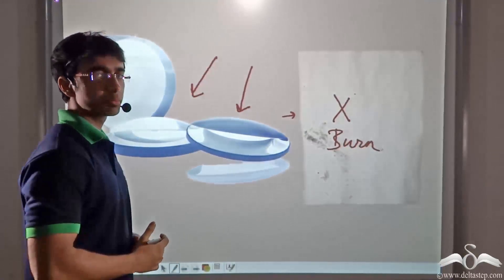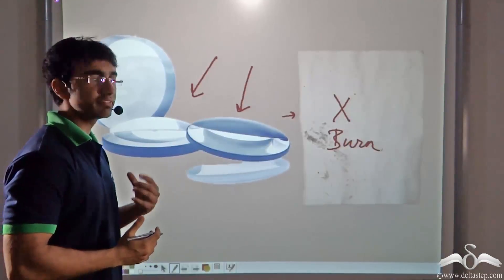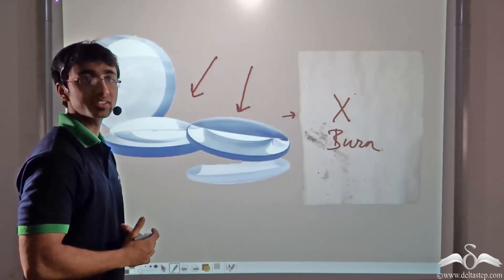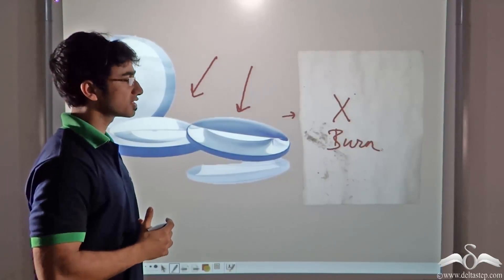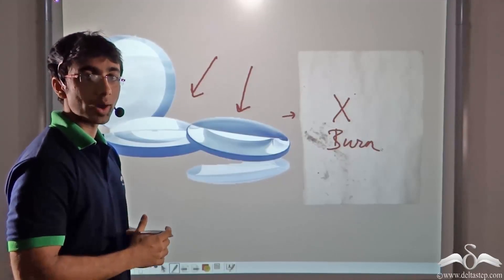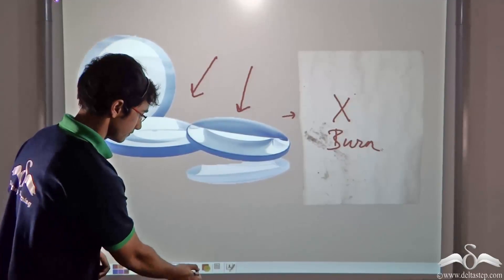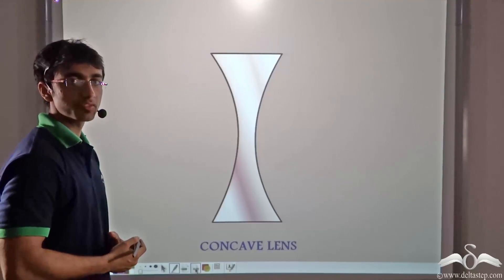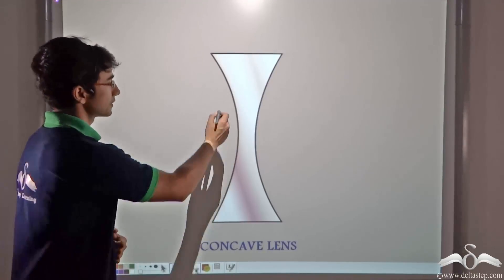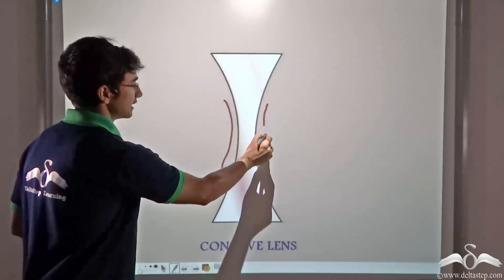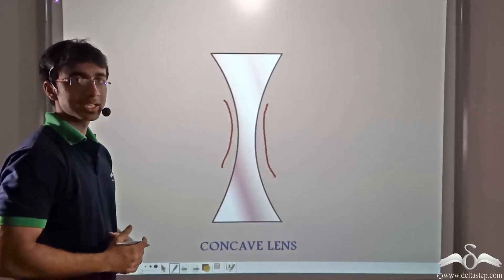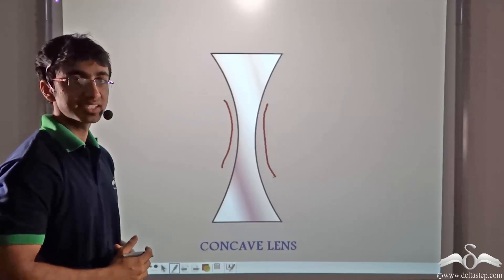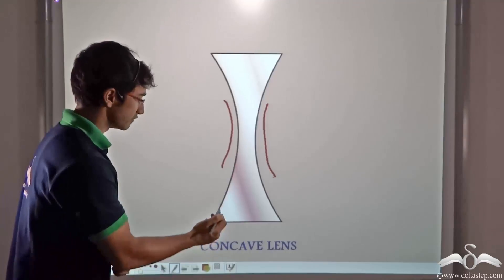Now why is the paper not burning? Even though we are holding up the concave lens in front of the paper and there is sunlight present, you will notice that the paper is not burning at all. Let us find out why this is happening. As you can see, this is the structure of a concave lens. In a concave lens, there are two surfaces that are curved inwards. Now let us get to the bottom of the mystery of why the paper did not burn when we placed it in front of the concave lens.